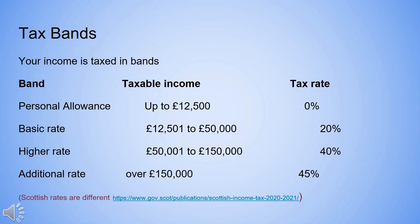In the UK we have a system called progressive taxation. That means that if you have a lower income you pay a lower percentage of your income in tax, and if you have a higher income you pay a higher percentage of your income.